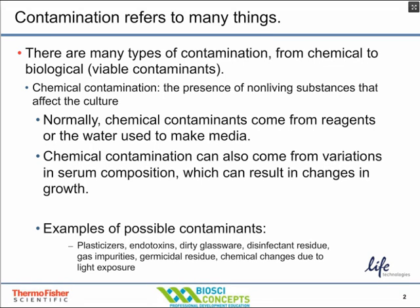Examples of possible chemical contaminants could be things like plasticizers, dirty glassware, disinfectant residue, cleaning residues, impurities from gas, and chemical changes due to light exposure. All of these things can affect the way your cells will grow in culture.